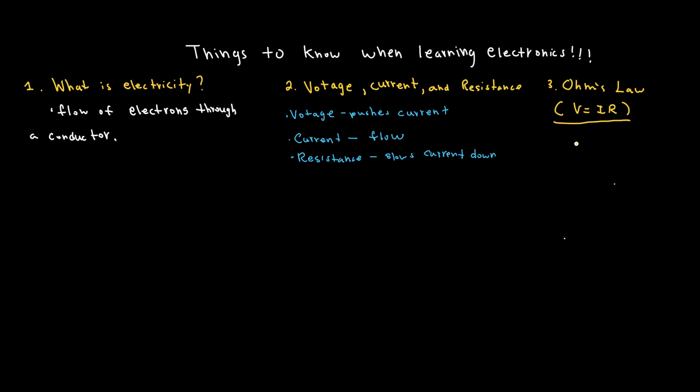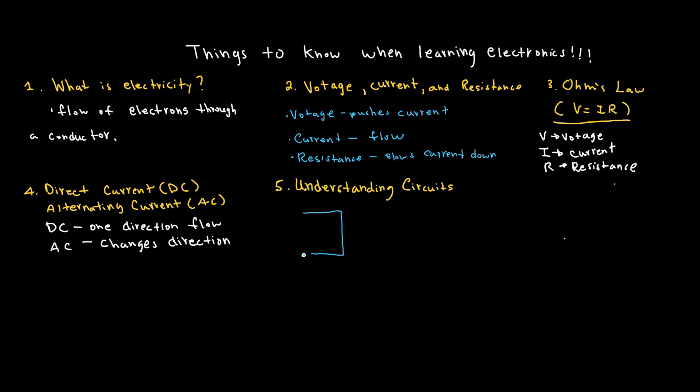The next thing you need to learn is direct current (DC) and alternating current (AC). DC flows in one direction like in batteries. AC changes direction like in household outlets. Most beginner circuits use DC. Next, you need to understand circuits. A circuit is a closed loop that allows current to flow—if it breaks, the current stops.